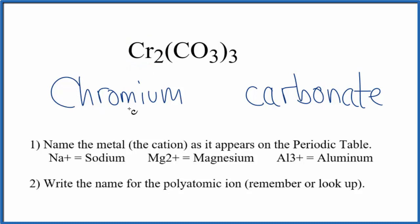But we said chromium is a transition metal, so we have to show that in the name. We have to show the charge for the chromium in the name. Carbonate always has a 2- ionic charge. That's the whole carbonate.